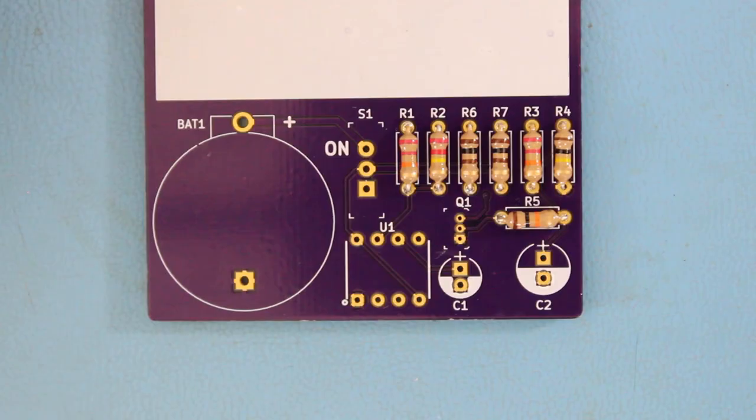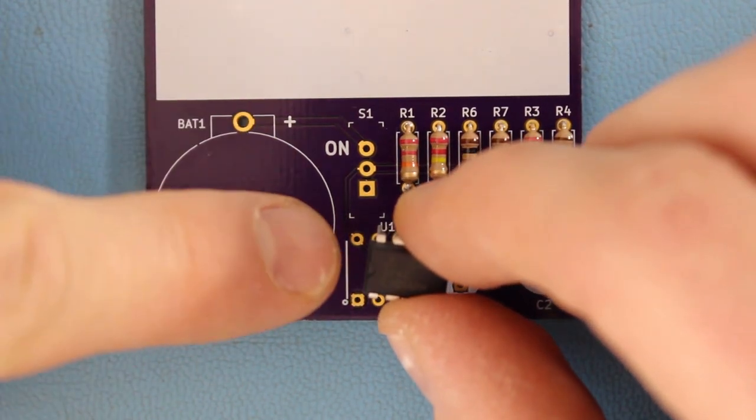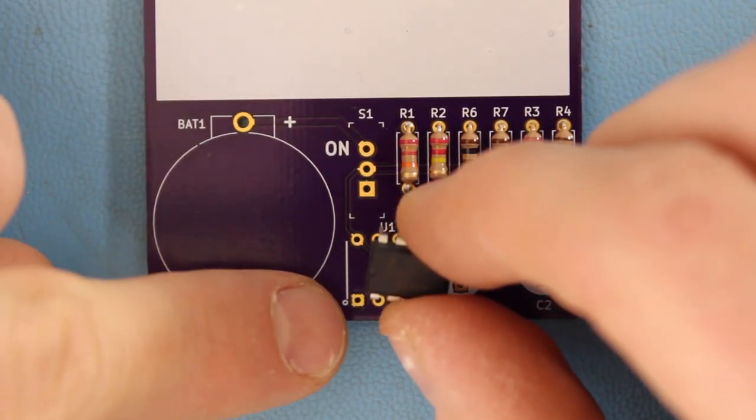Repeat for the other side. Place the 7555 on the board. Note that the notch should be pointing to our pin one marker on silkscreen.